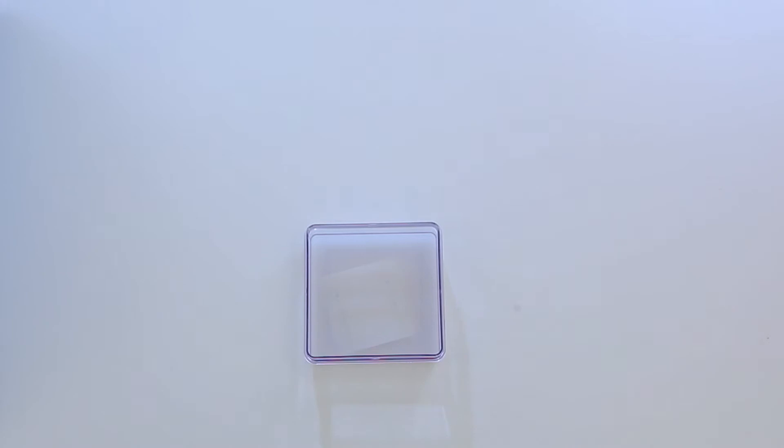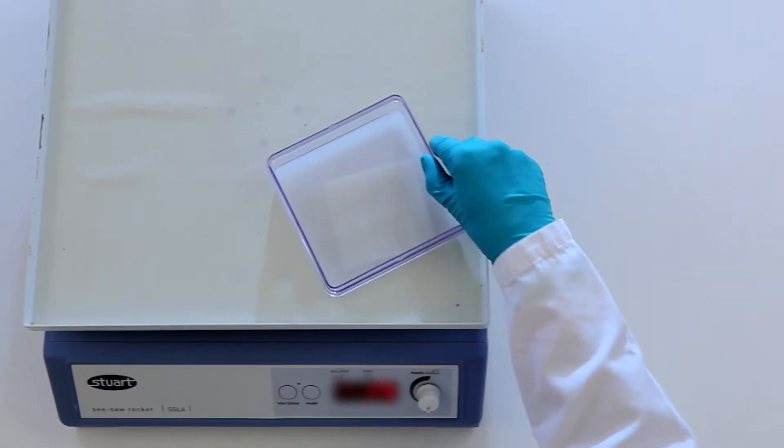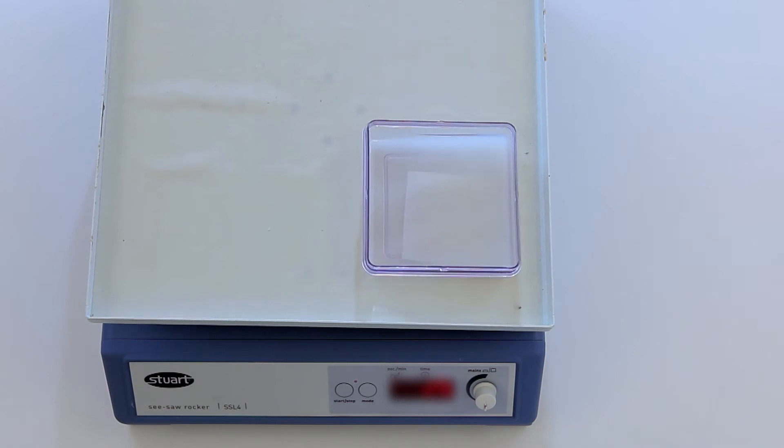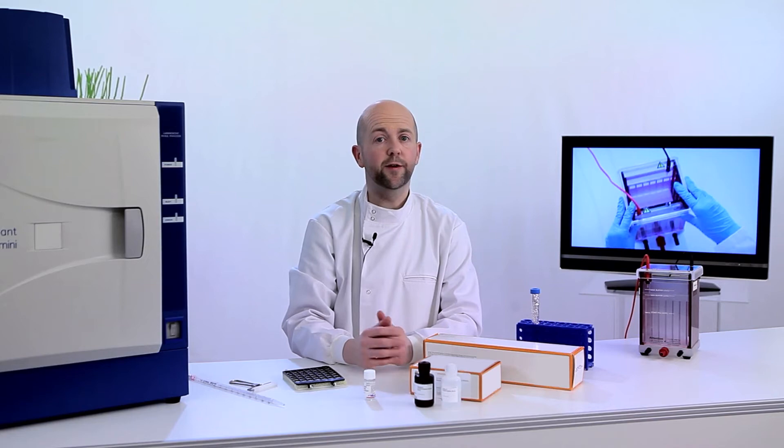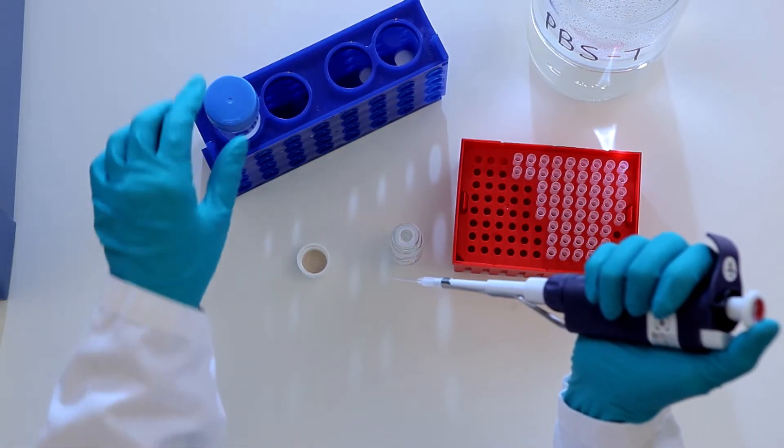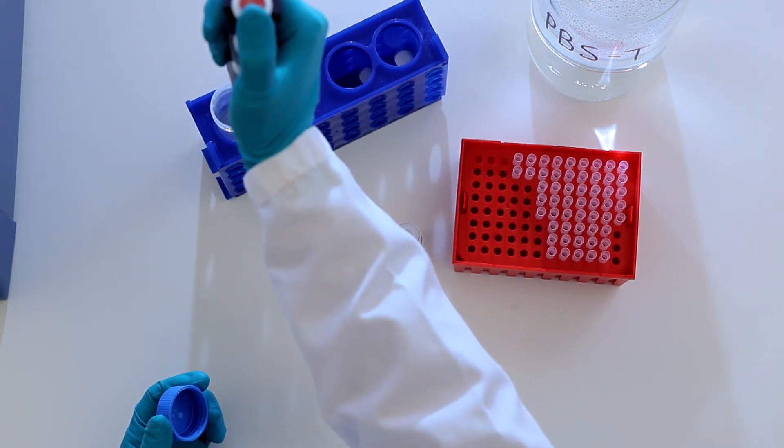Next, block the free sites on the membrane using the appropriate reagent, such as ECL prime blocking reagent. This normally takes one hour at room temperature. Use this time to prepare the primary and secondary antibodies. Dilute your primary antibody with PBST. If working with phosphorylated proteins, you must use TBST.